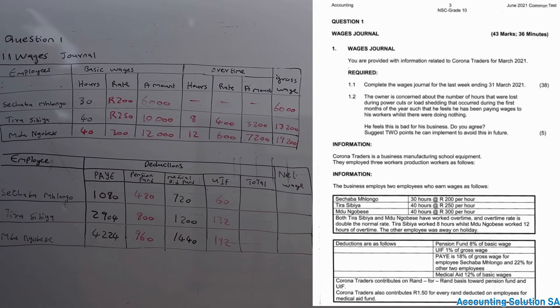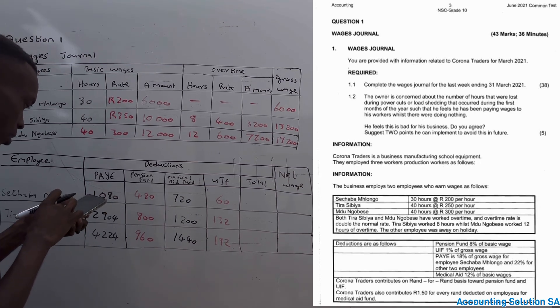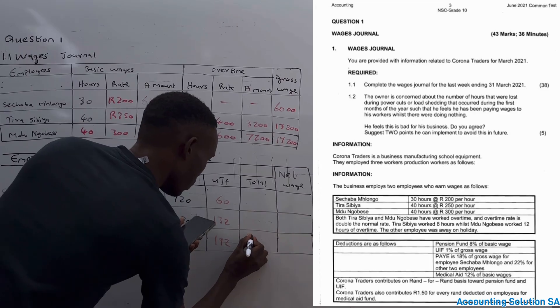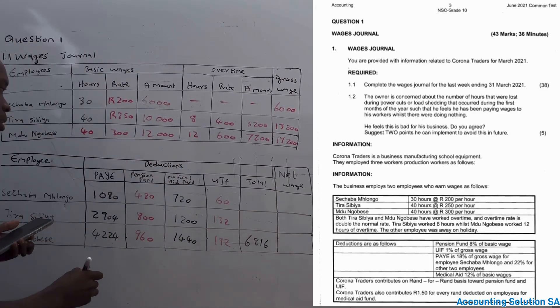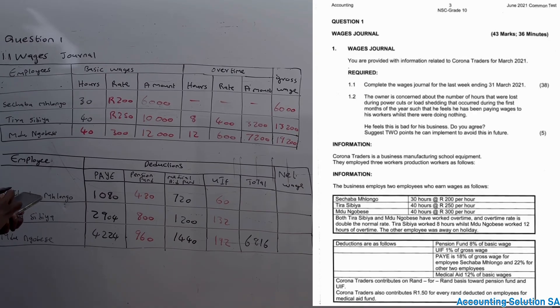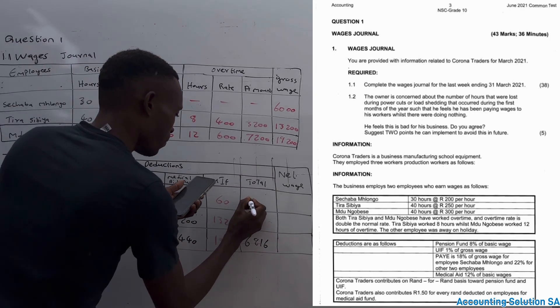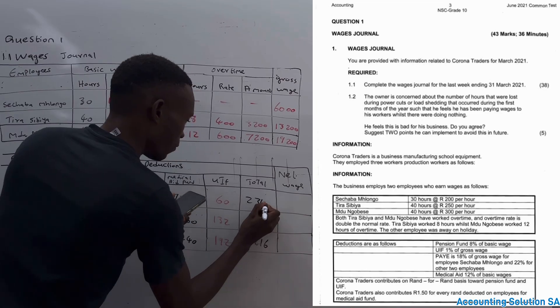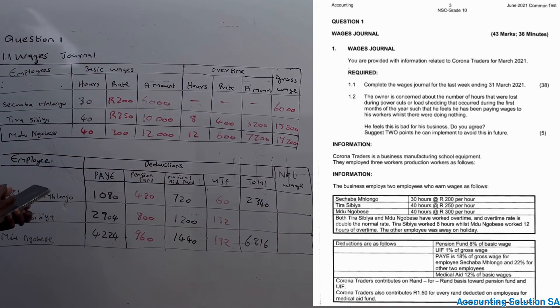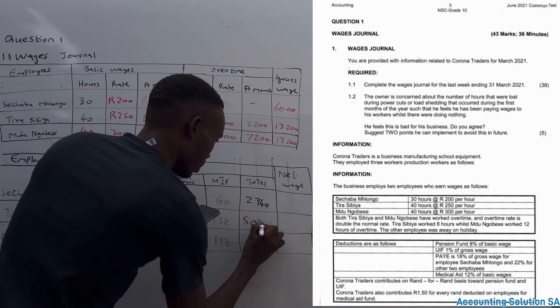Now we need to calculate total. Total, they mean you have to add all these four. Let's add total quickly: plus 960 plus 4,224. For this one we're going to get an amount of R6,816. For the other one: 1,080 plus 480 plus 720 plus 60, it's going to give you R2,340. 2,904 plus 800 plus 1,200 plus 132 is going to give you R5,036.